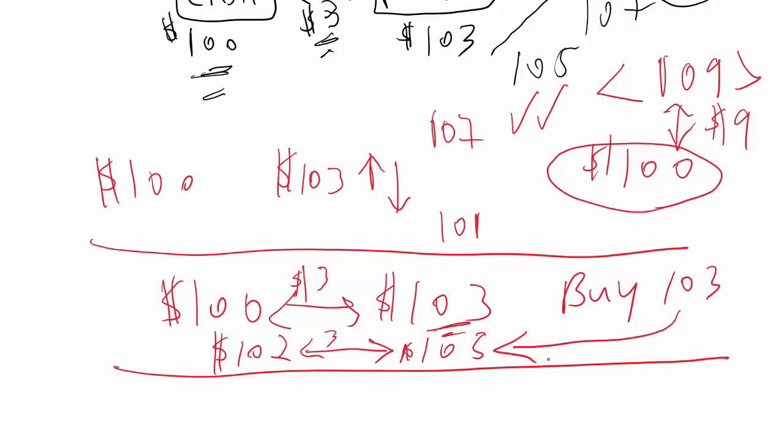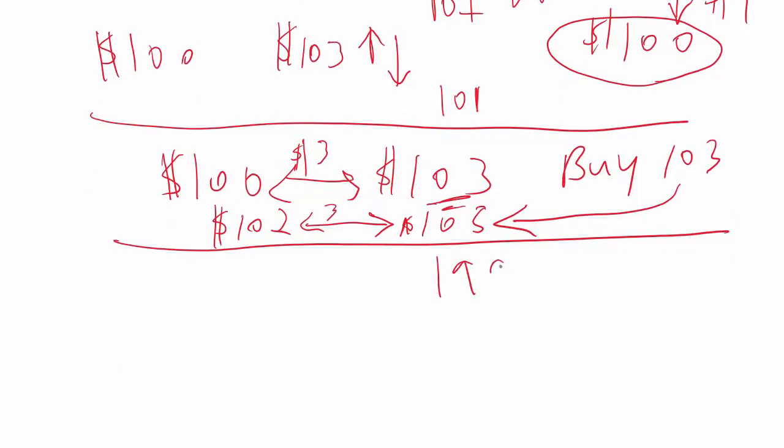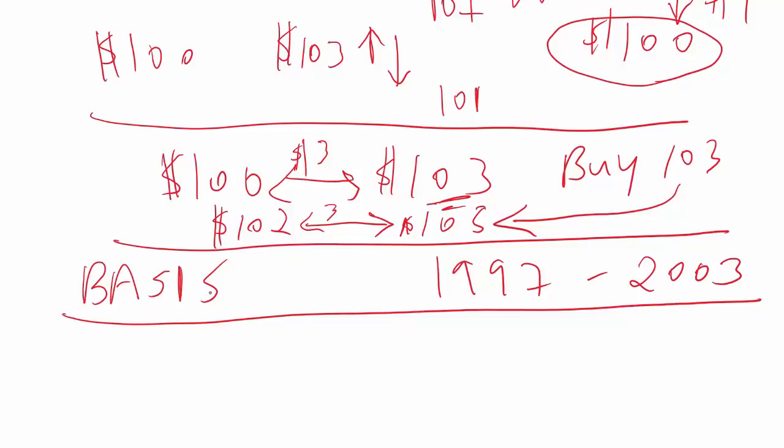So that's an overview. You can't do this trade anymore. This trade is no longer available because the edge has been taken all out of it. But this is what I traded from 1997 to 2003. All relative value, all pair trading. This is professional trading. This is how traders look at it.